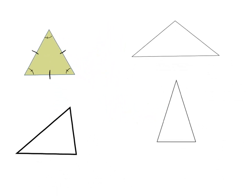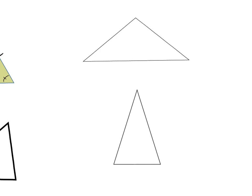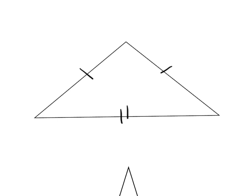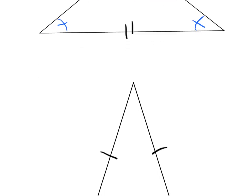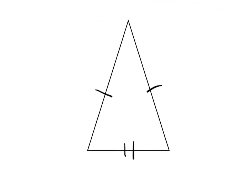Moving over to our isosceles triangles — we had same, same, different sides. The angles have the same kind of relationship. These two angles are the same and this one is different. I'll put a dash and a dash to show those two angles are the same, then two dashes to show the oddball angle. I can do the same for this isosceles triangle: these two match, and this is the oddball.